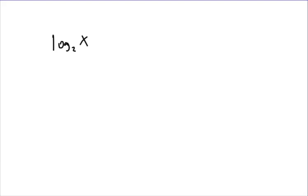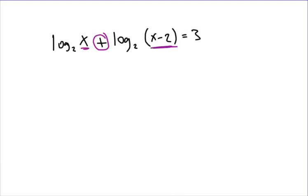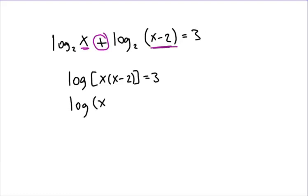Number 6 then: log base 2 of x plus log base 2 of x minus 2 equals 3. On this one, you've got to condense the logs together. Remember, if there's a plus sign in between the logarithms, then you multiply those interior items. These are all base 2s.